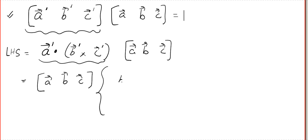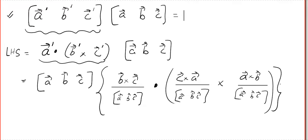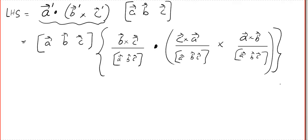What is a dash? A dash is b cross c divided by STP. Dot. What is b dash? c cross a divided by STP. Cross a cross b divided by STP. We have done so many problems like this now. I hope you are comfortable with this.